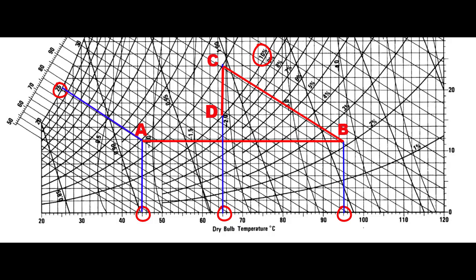We can read the values of humidity ratio on the right-hand side of the chart. For point C it is 24 grams of water per kilogram of dry air, for point D it is 16, and for point B it is 11.7 grams of water per kilogram of dry air. One more value we need is the specific volume for ambient air at point A. The adjacent specific volume lines are 0.9 and 0.95, so we estimate the specific volume at point A as 0.92 cubic meters per kilogram dry air.